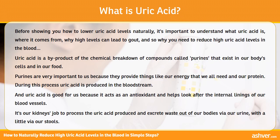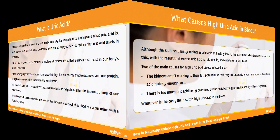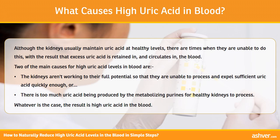It's our kidneys' job to process the uric acid produced and excrete waste out of our bodies via our urine, with a little via our skin. Although the kidneys usually maintain uric acid at healthy levels, there are times when they are unable to do this, with the result that excess uric acid is retained in, and circulates in, the blood.